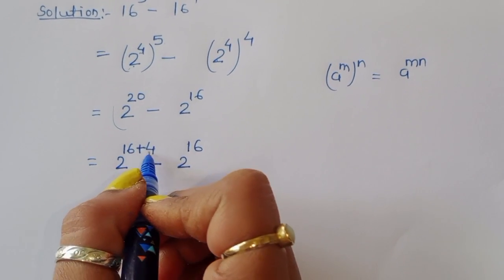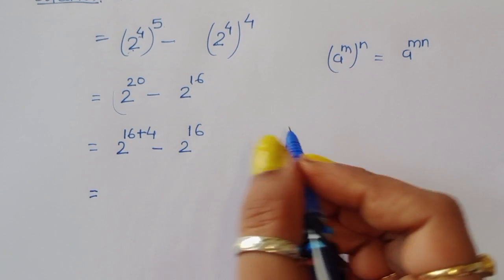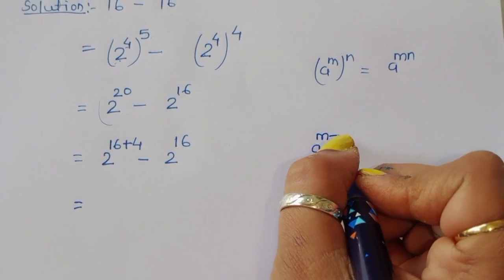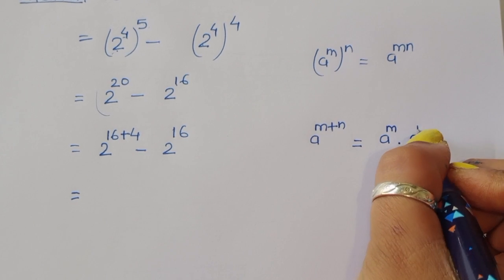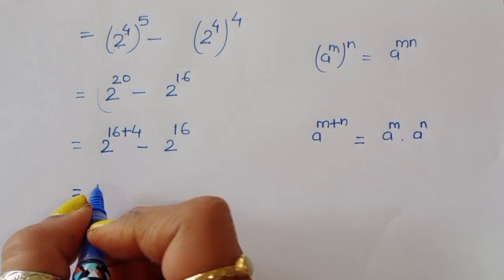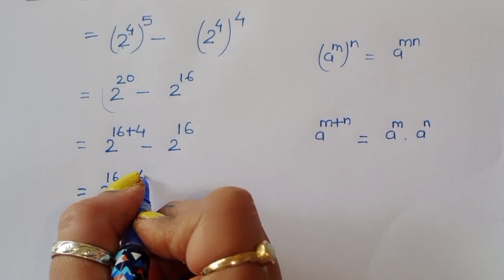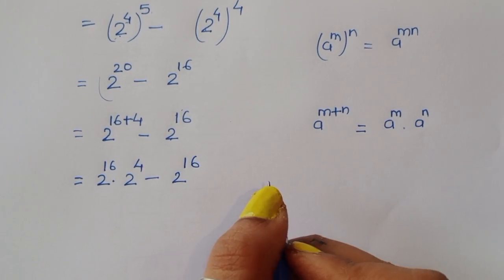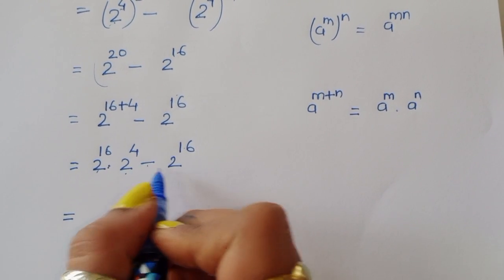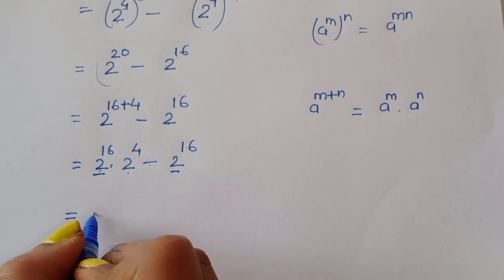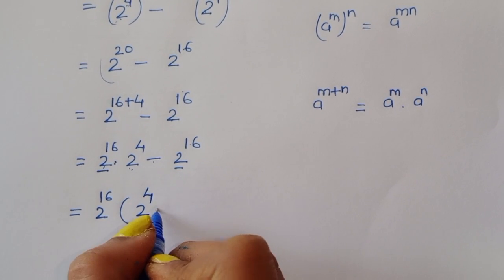Why are we converting 20 to 16 plus 4? Because 2 power 16 is already present in the expression. So using the formula a power m plus n equals a power m times a power n, we can write 2 power 16 times 2 power 4, minus 2 power 16. Now 2 power 16 is common in both terms, so we take it as a common factor, leaving 2 power 4 minus 1.